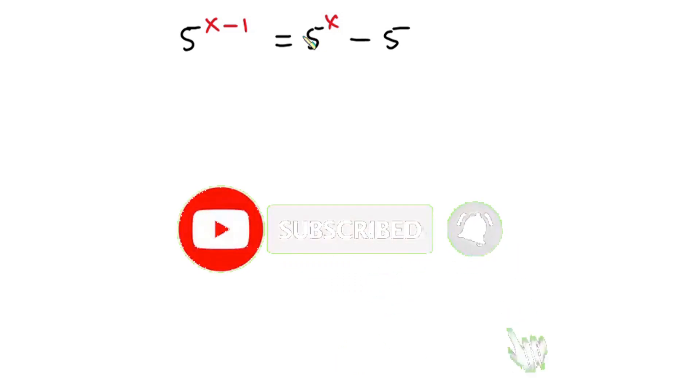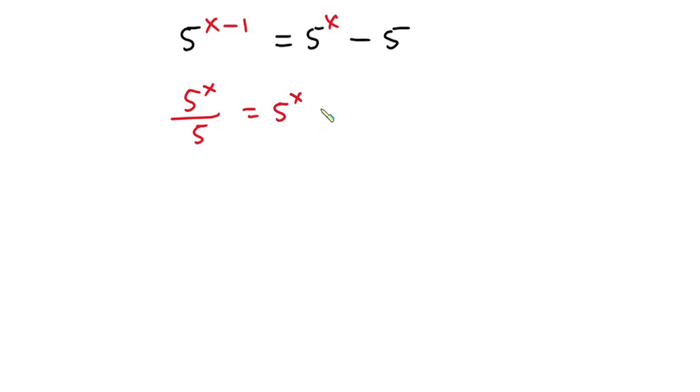Now let's get started. First I'm going to write 5 to the power x minus 1 as 5 to the power x over 5, and this equals 5 to the power x minus 5. Now let's multiply each side of this equation by 5 so that this 5 will cancel.